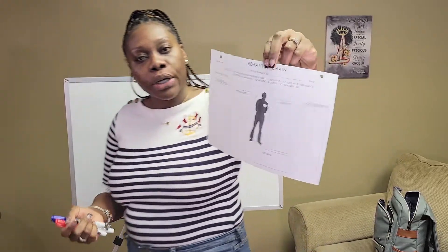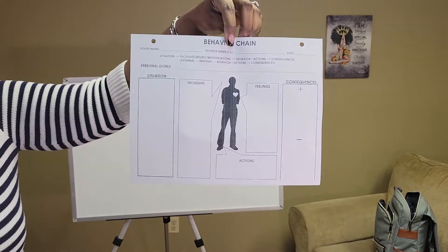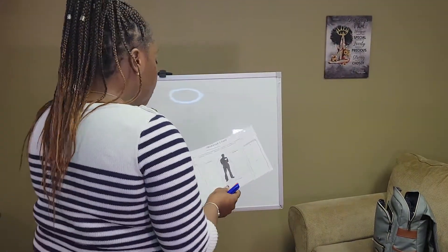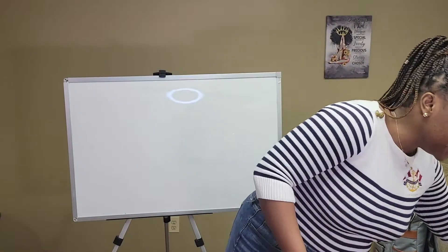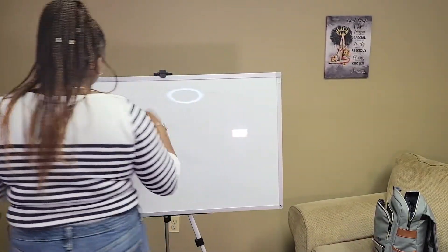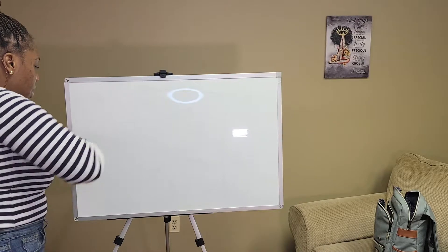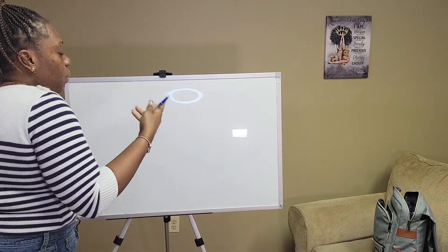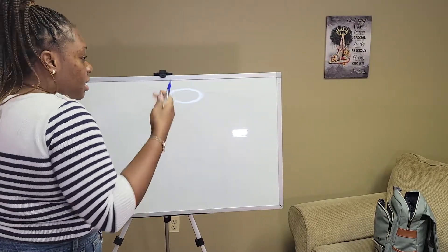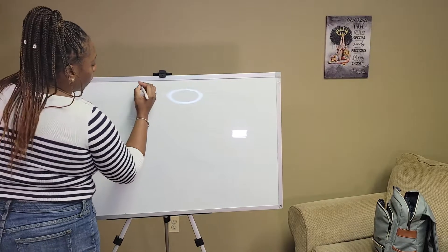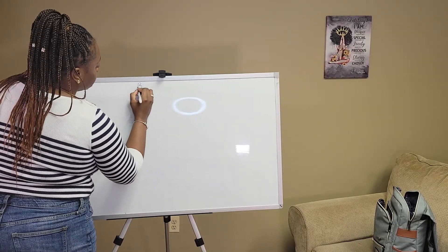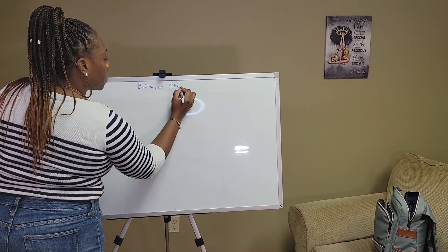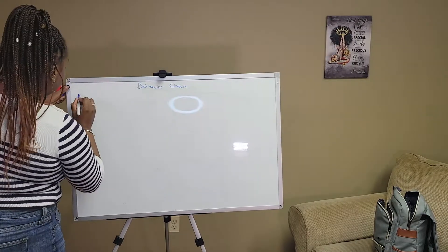I'm going to recreate this on the board, so let me bring it a little closer so you can get a close-up shot. Okay, so for the behavior chain: a behavior chain helps you work with your client to address a particular situation that caused them to exhibit a negative action. So let's go ahead and write that up here — you have the situation.